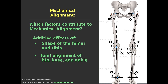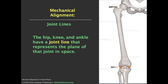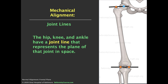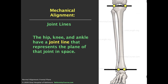These angles account for the shape of the femur and tibia as well as joint alignment of the hip, knee, and ankle. The joint line is aligned to represent the orientation of the joint in space. For the proximal femur, it goes from the center of the femoral head to the tip of the greater trochanter. For the distal femur, it touches the medial and lateral condyles. For the proximal tibia, a line approximating the plateau defines the joint line at the knee. In the distal tibia, a line approximating the plafond defines the ankle joint line.